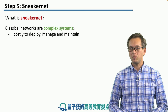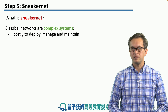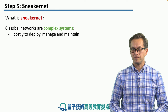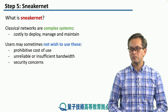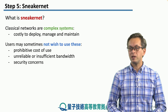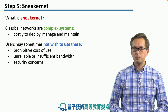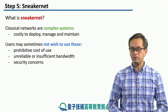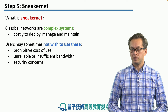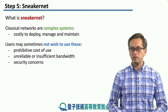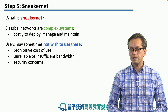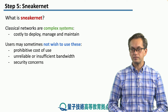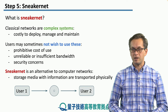Classical networks are very complex systems and they're also very costly to deploy, manage, and maintain. So sometimes it's not possible for users to use them or they may not wish to use them. The costs might be prohibitively high, or the bandwidth of the network could be insufficient or unreliable, or the users might have security concerns, meaning their data is too sensitive to be placed online. And this is where Sneakernet comes in.